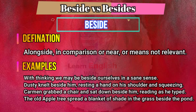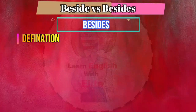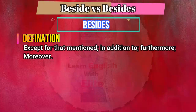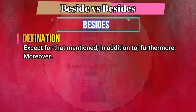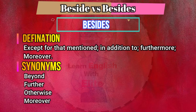And now let me define the second word: besides. The definition of besides is: except for that mentioned, in addition to, furthermore, moreover.